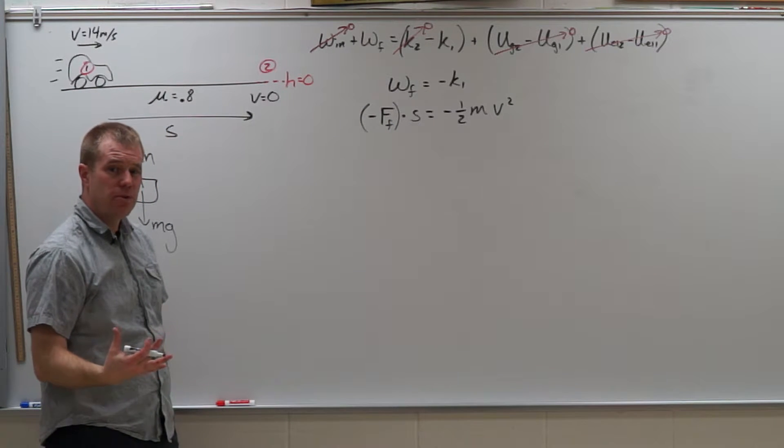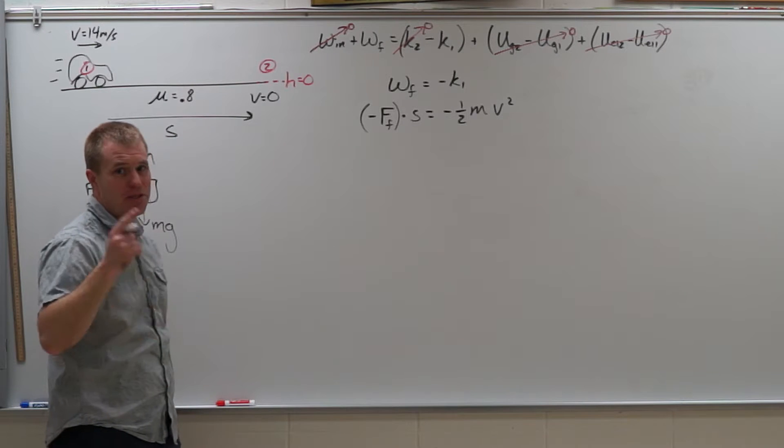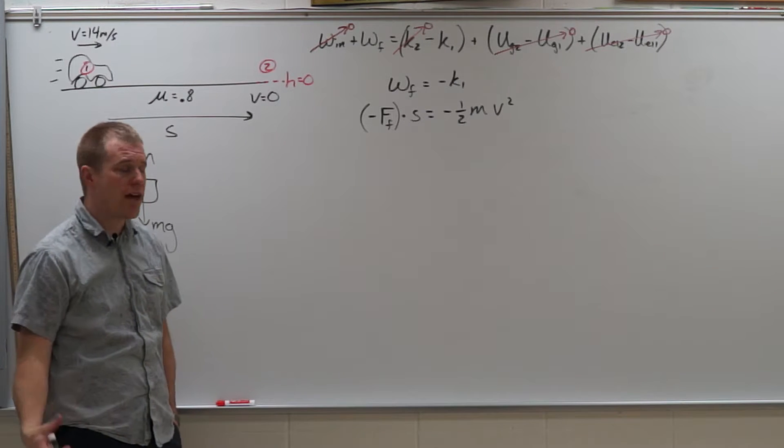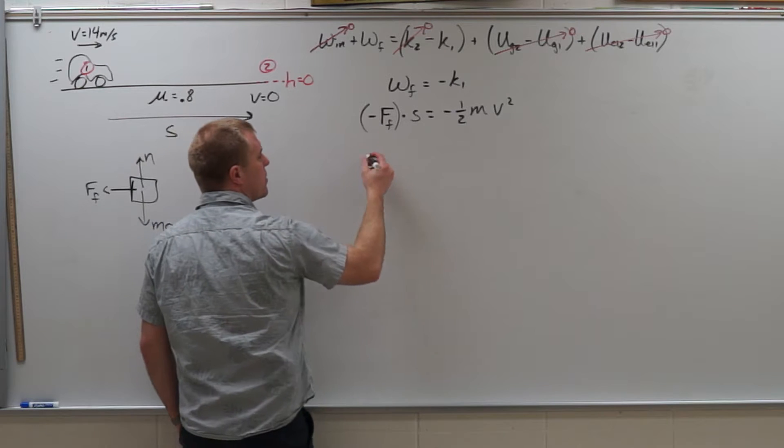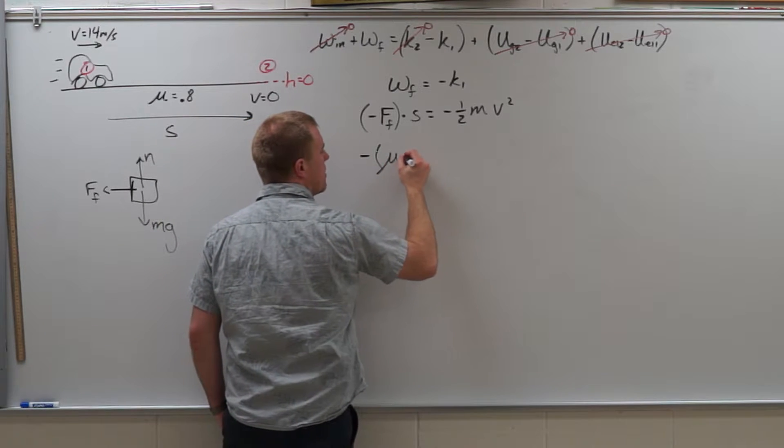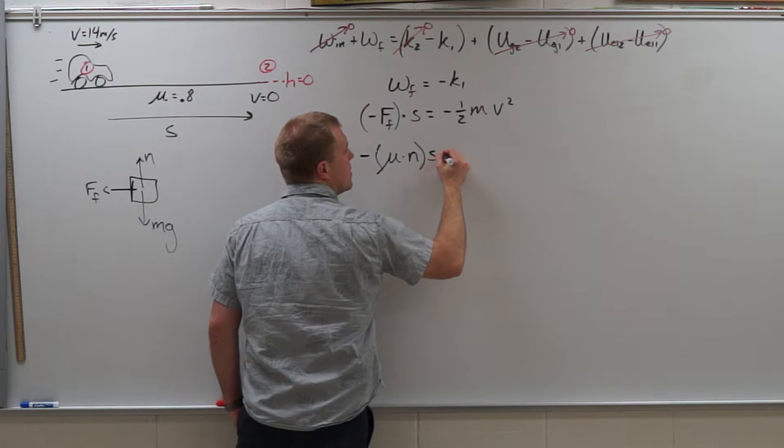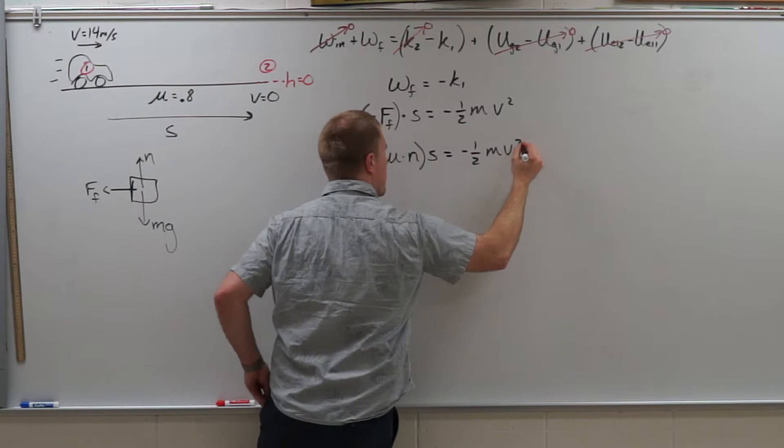Force of friction, what do we do with that? Well last chapter we did substitute, substitute, substitute, so we're going to try that again. So instead of force of friction we're going to substitute in μ times the normal force equals negative 1/2 mv squared.